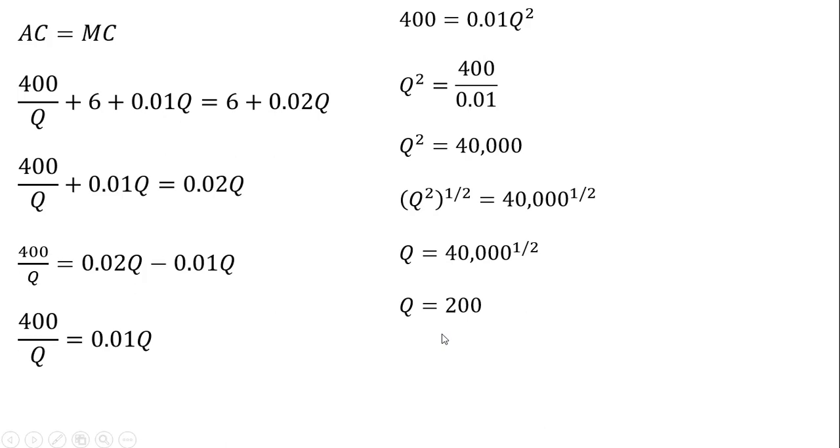So average cost equals marginal cost when the firm produces 200 units of output. We could calculate the value of that cost, average cost or marginal cost, at 200 units of output by taking this 200 and plugging it back in either the average cost or marginal cost equation. So at q equals 200, and I'm plugging it here back in the marginal cost equation, we see that average cost and marginal cost will be $10.